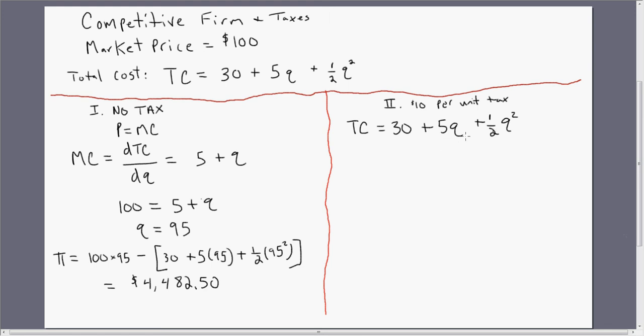So this is a total cost without the tax, but with the tax, now every time the firm produces an additional unit of output, it's got to pay $10. So we're going to add this 10 plus Q into the total cost equation. This will simplify down to 30 plus 15 times Q plus 1 half Q squared.